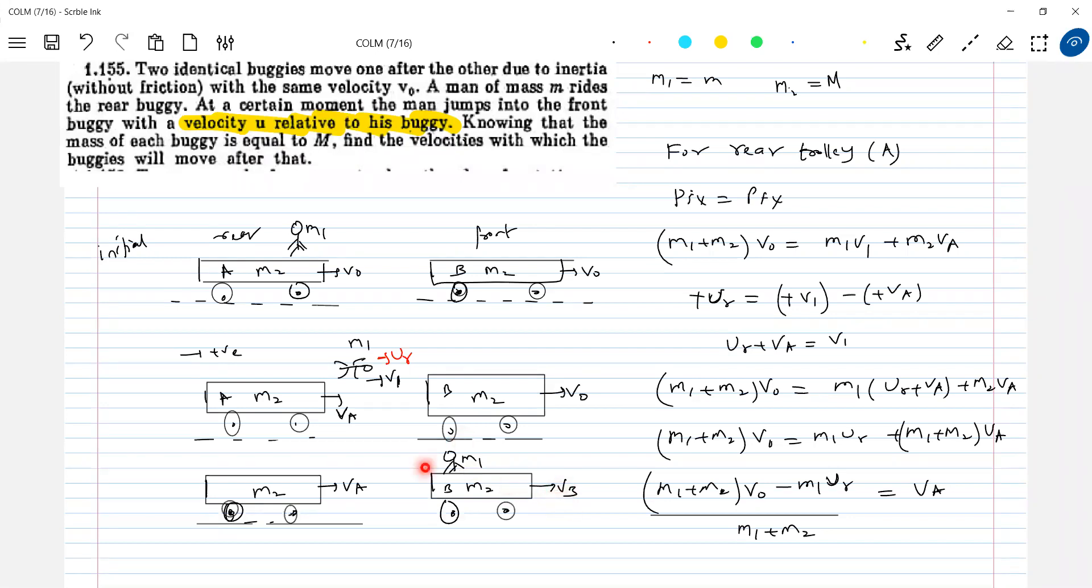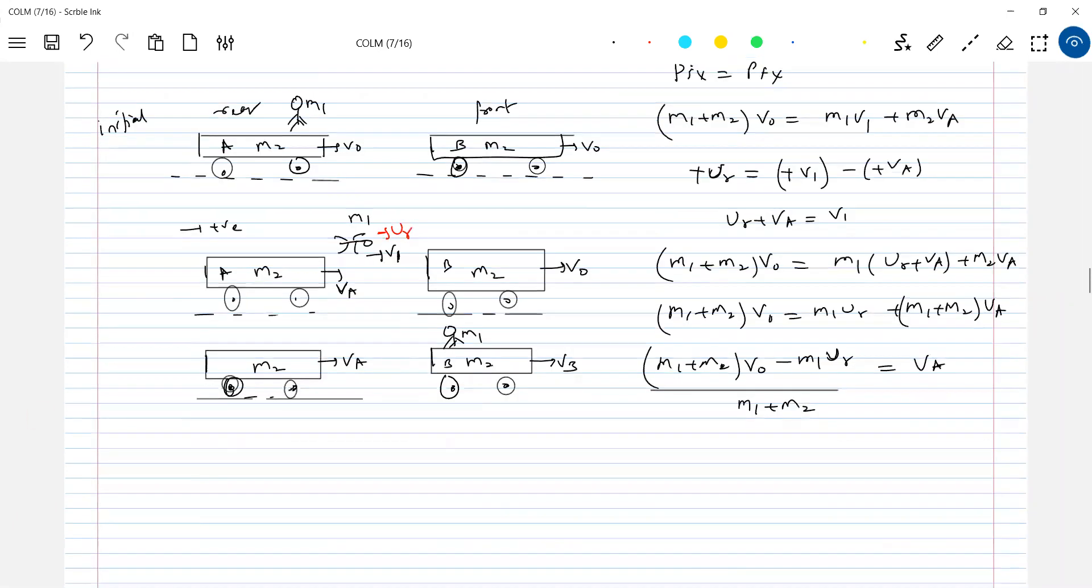That has to be found out. So from where I should get it? So I know, I don't know v1. What to do with v1? We know vA. And substituting here, I'll get v1. So it's very simple. So what I do is the next part. For front trolley B, conservation of linear momentum. pIx equal to pFx. Initial momentum. So initial momentum m1 v1 plus m2 v0. This should be equal to m1 plus m2 vB.